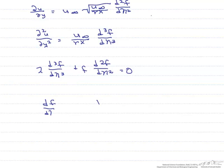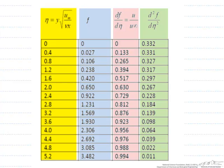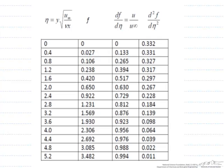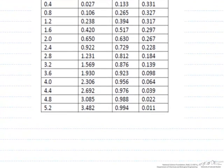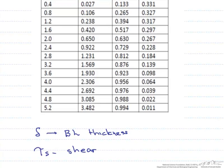Our boundary conditions are that df/d-eta at eta equals 0 will equal 0, and df/d-eta at eta equals infinity equals 1. This differential equation can then be solved using a series expansion or analytically, producing the boundary layer solutions. These can be used to find a number of different variables, including delta, which is the boundary layer thickness, as well as tau-sub-s, which is the shear stress at the wall. In subsequent screencasts, I will show you how to find both of these properties.